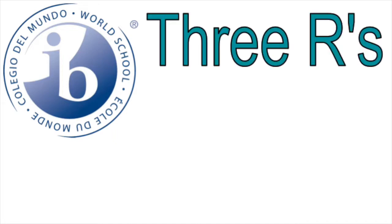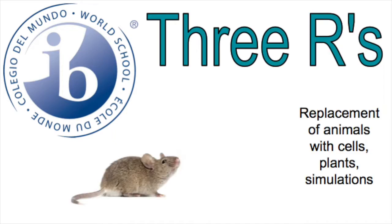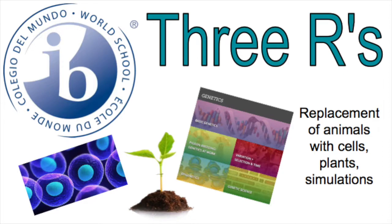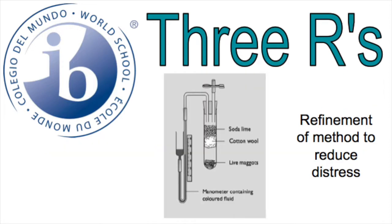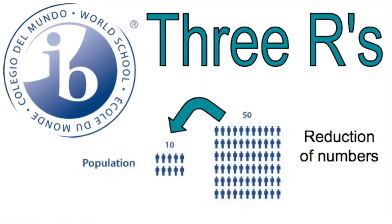However, this does not mean that you can do any tests on any organism willy-nilly. The International Baccalaureate Organization has published its official statement in 2015 about the use of animals in experimentation. They can be remembered as the three R's: replacement of animals with cells, plants, or simulations; refinement of methods to reduce distress; and the reduction of numbers.